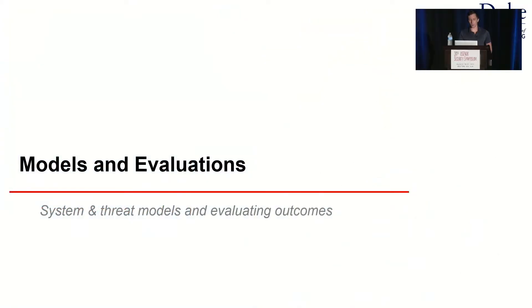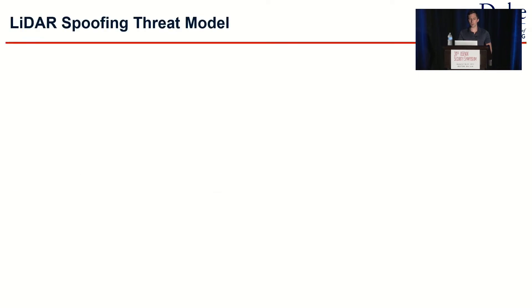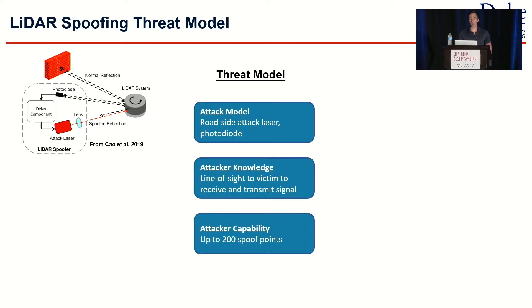A little bit of information on the system and threat models we're using. For our threat model, we're using a LiDAR spoofing model where an attacker places a roadside laser and a photodiode to receive the victim LiDAR sensor's laser beams, understand where it's coming from, process it through a delay component, and shoot back laser beams through an attack laser. The only knowledge required is line-of-sight information between the victim and the attacker. We're using a baseline from prior works showing that up to 200 spoof points was stably achievable.